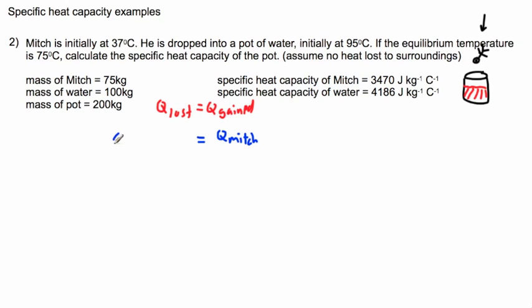On the left side we're going to have Q of the pot plus Q of the water. It's going to be annoying to write pot, water, and Mitch, so I'm going to say P, W, and M.